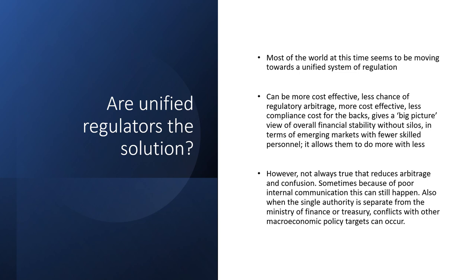However, it's not always true that it reduces arbitrage because of the bureaucracy — problems with internal communication can still happen. And it can conflict with macroeconomic policy if the single authority is separate from the Ministry of Finance or the Treasury. For example, the Ministry of Finance might be pushing banks in a certain direction, while the regulatory authority — more concerned with preventing a banking crisis than stimulating the overall economy — might have different objectives.